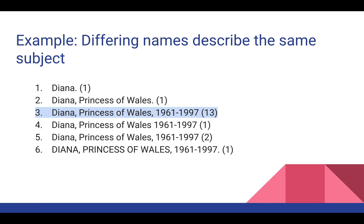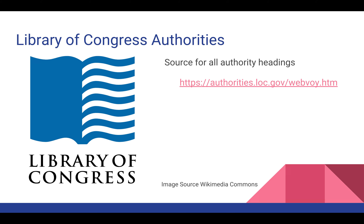If you chose number three, you're correct. Who decides the best way to represent her or any other person in a record? This is left up to the Library of Congress authorities — the source for all authority headings. This is not the only source, but it is the one that we at CKLS use exclusively. I'll get to finding authorized information in a bit, but first I want to take a look at the MARC record.